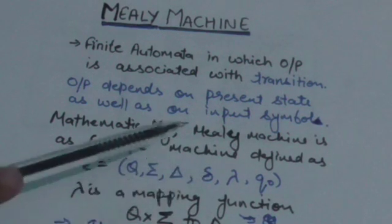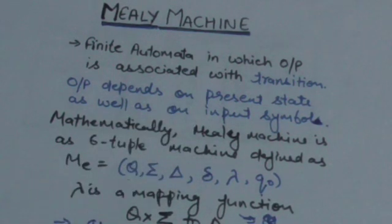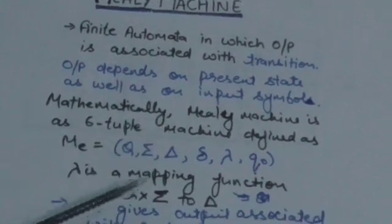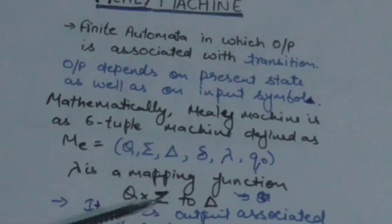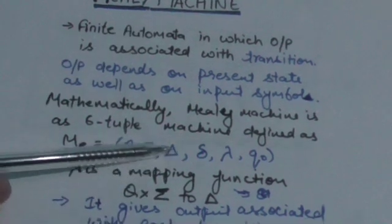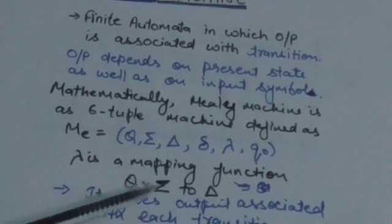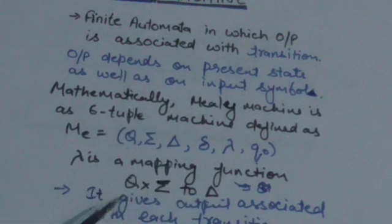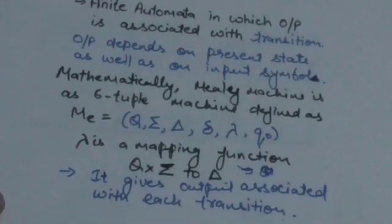Lambda is the output function. Here the output depends on the present state as well as on the input symbol, so it maps the present state and input symbol to an output. It gives the output associated with each transition.